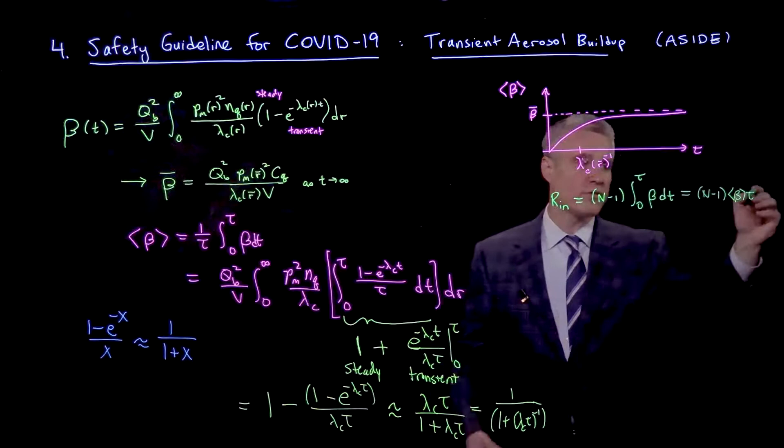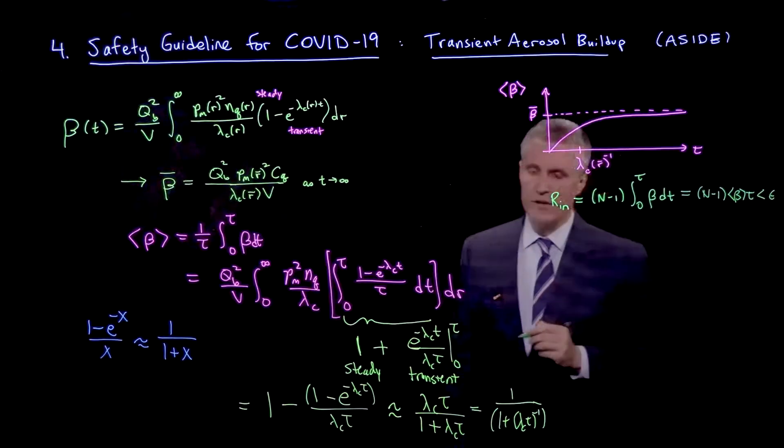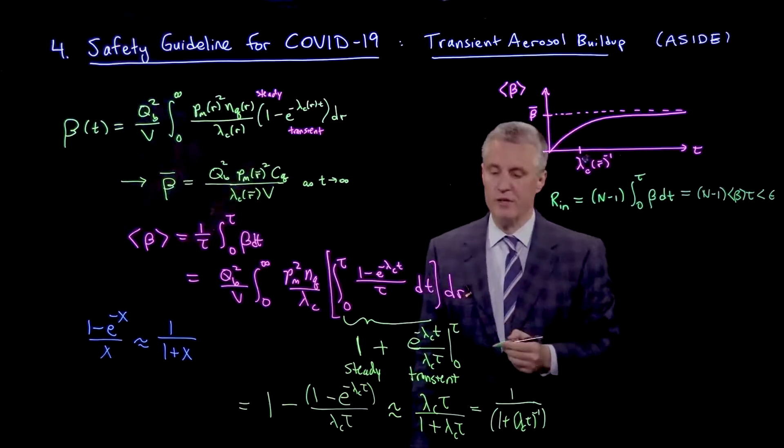So this bound is actually n minus 1 times average beta times tau. And then our guideline, of course, is to make this less than our tolerance epsilon.